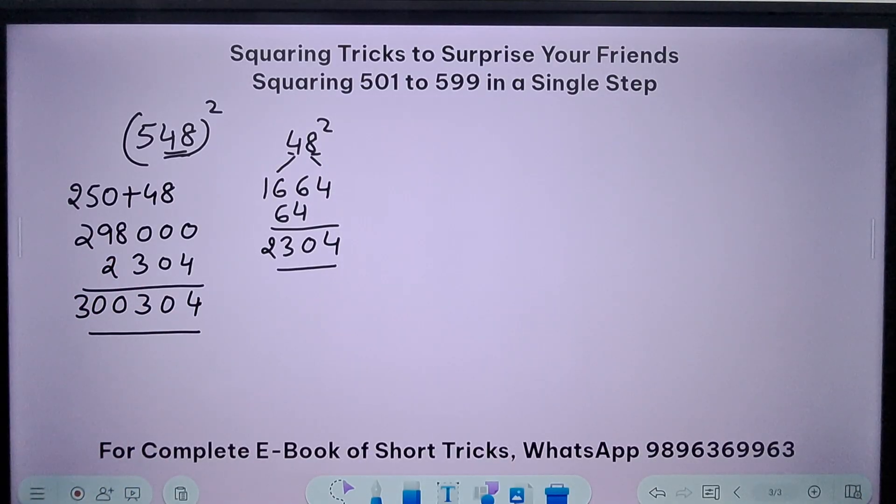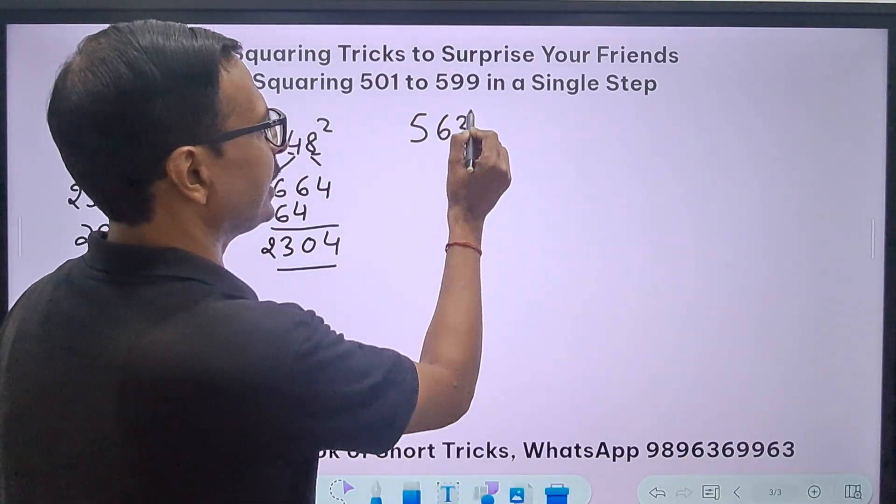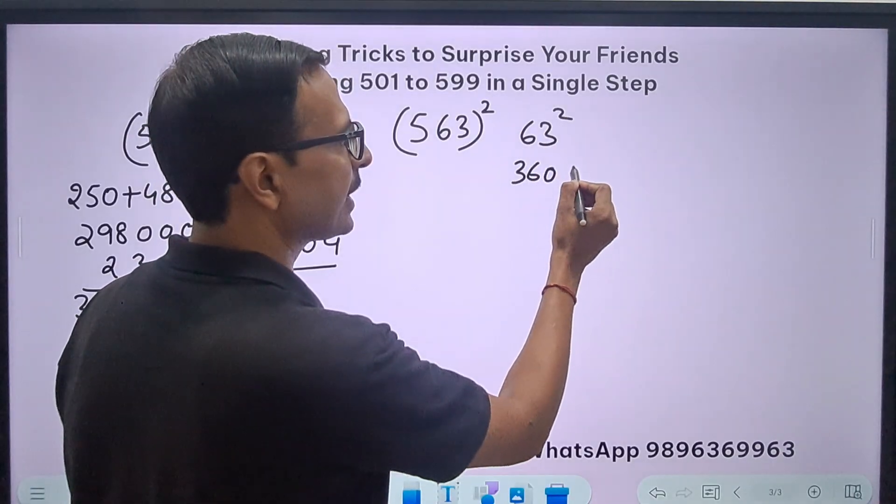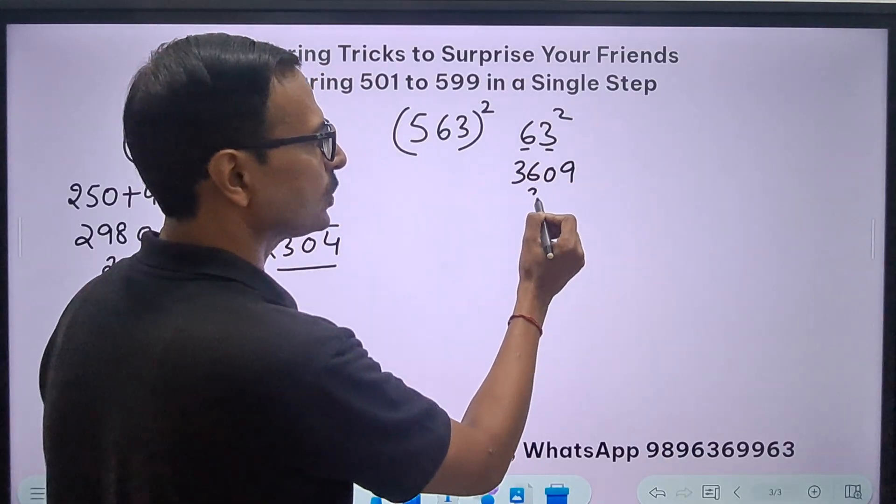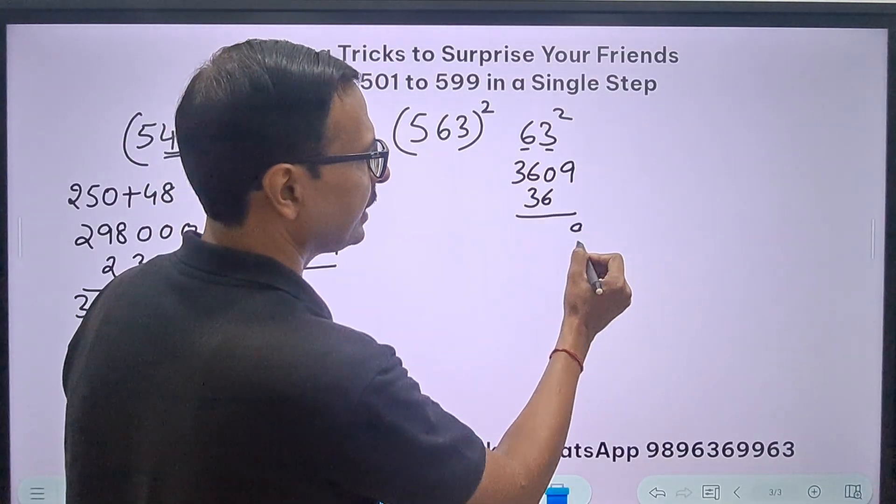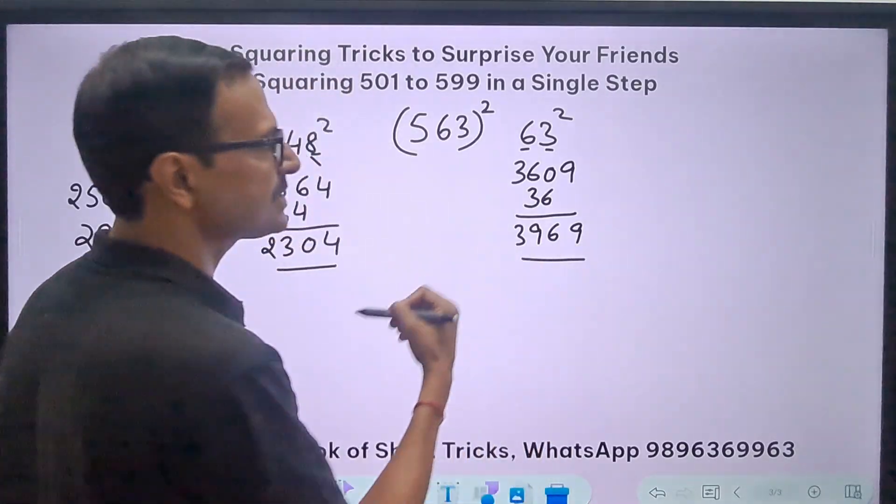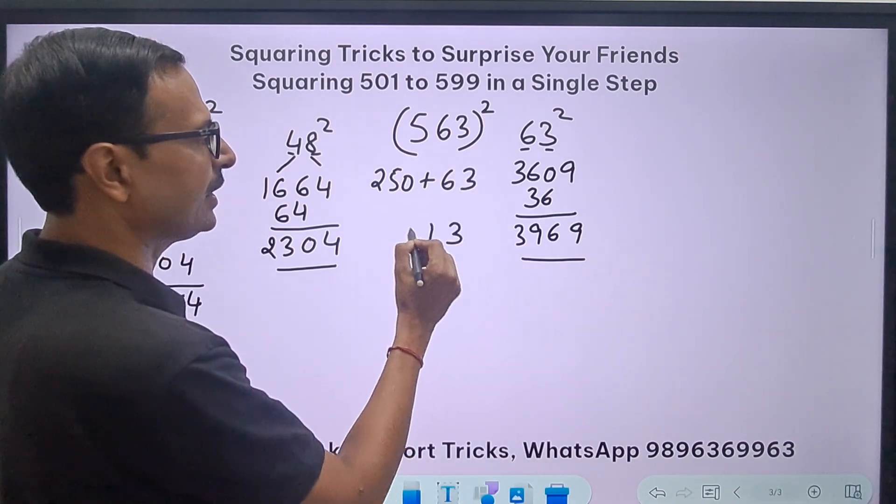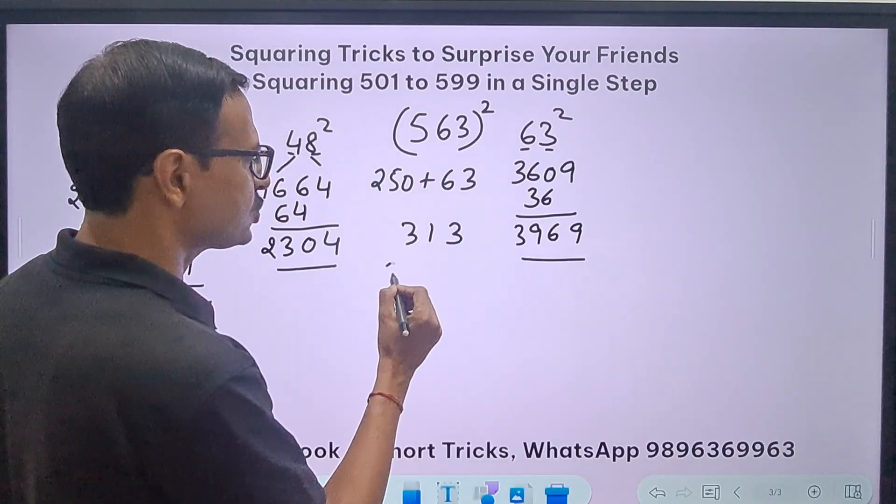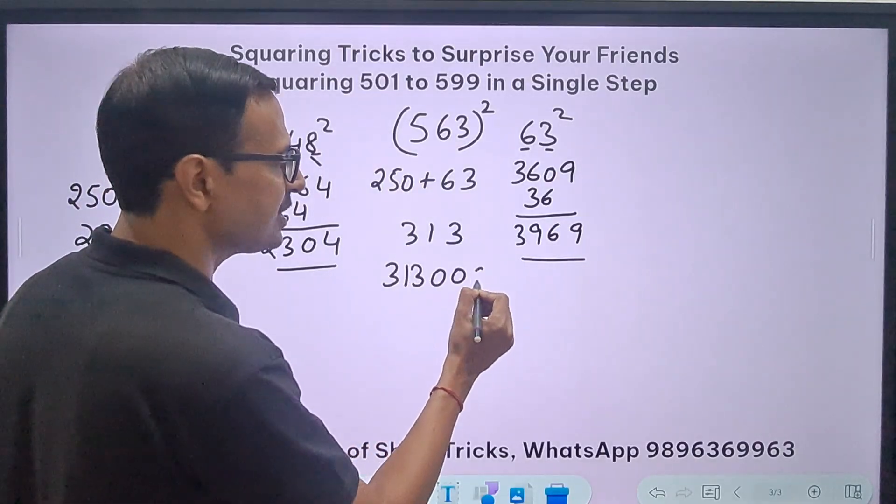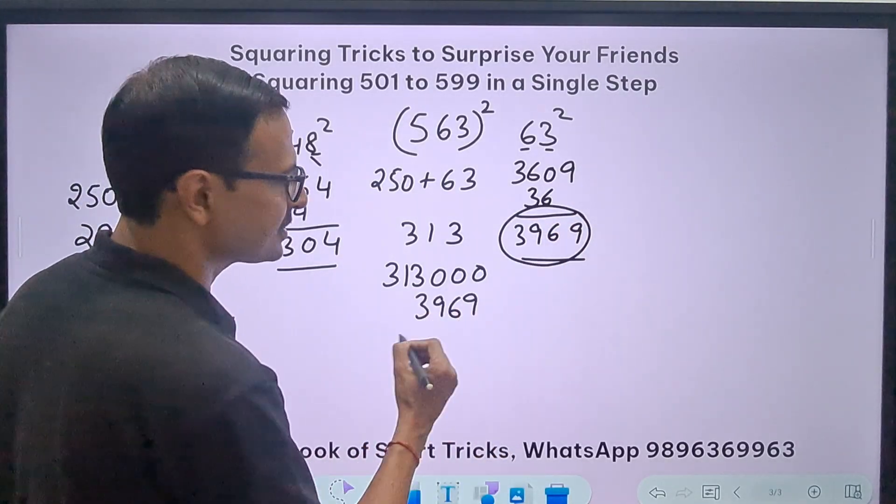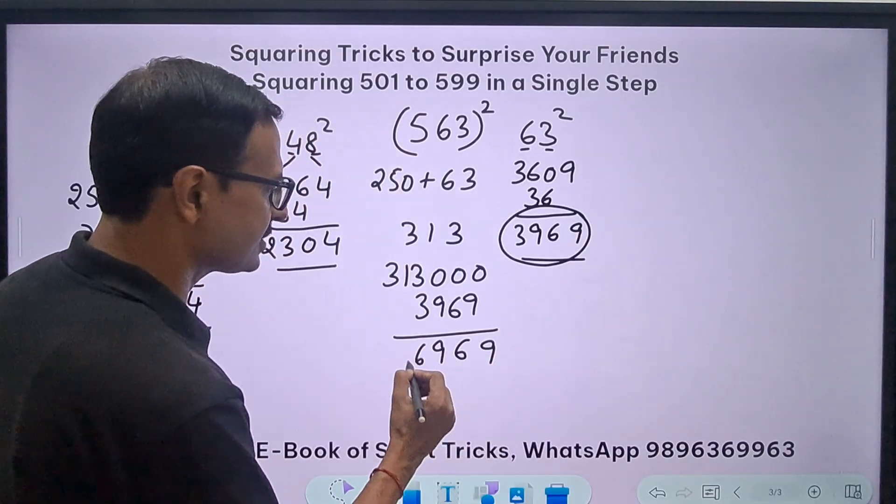You can check now 563 square. 62 square is 3969. So 250 plus 63 is 313, right? And 313 is to be suffixed with three zeros, and then I will have to add 3969 to the result. I will get 316969.